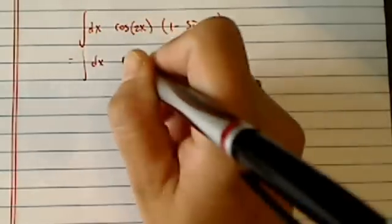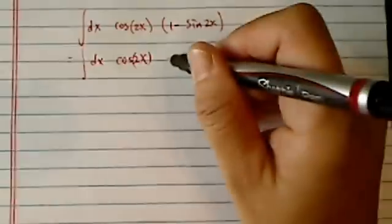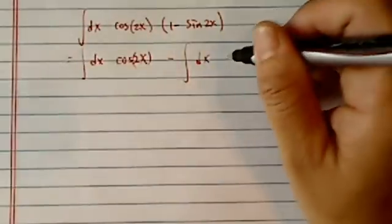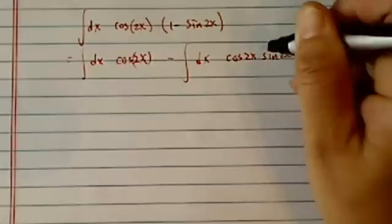So I have a dx over here and let's multiply it back in there. So cosine of 2x. I'm going to minus dx. I'm going to split those two up. So I have a cosine 2x and sine 2x over here.